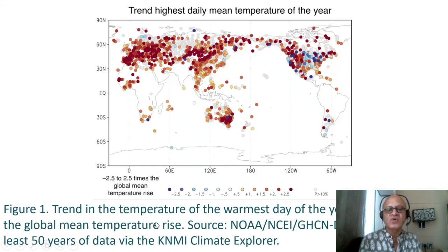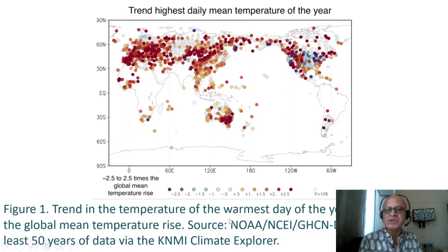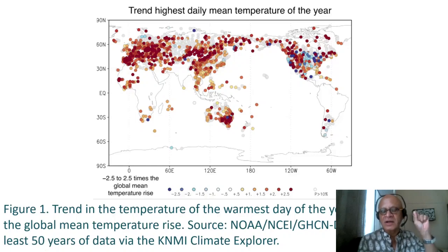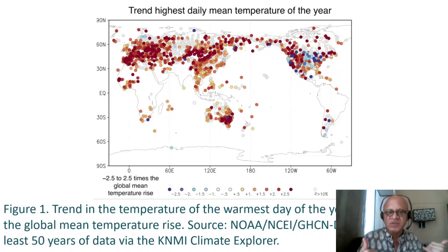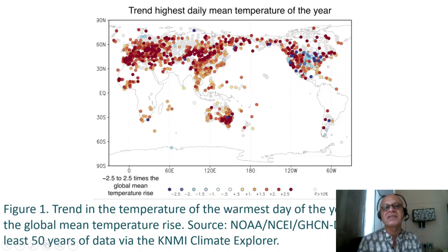KNMI looks at anomalies in the highest daily mean temperature of the year as a fraction of the global mean temperature rise. So this is the trend in the temperature of the warmest day of the year as a multiple of the global mean temperature rise — telling you whether you are having temperatures warming faster than the global warming rate or lower. These numbers obviously have to go from negative to positive because if you are looking at global warming rates, not everybody can be higher; some regions have to be lower.